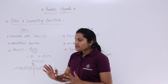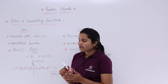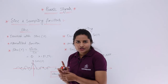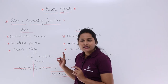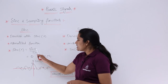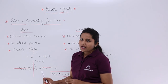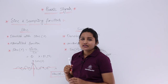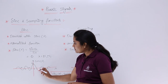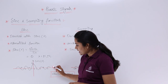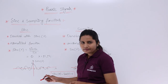Coming to the definition: the sinc function is defined as sin(πλ) divided by πλ. It is equivalent to 0 for every discrete interval of lambda. So the value of the sinc function becomes 0 at every discrete interval of lambda — even though this function is in the form of sine, it becomes 0 at every discrete interval.